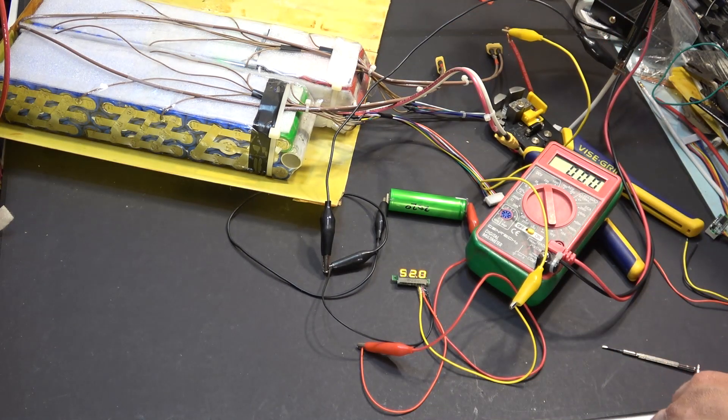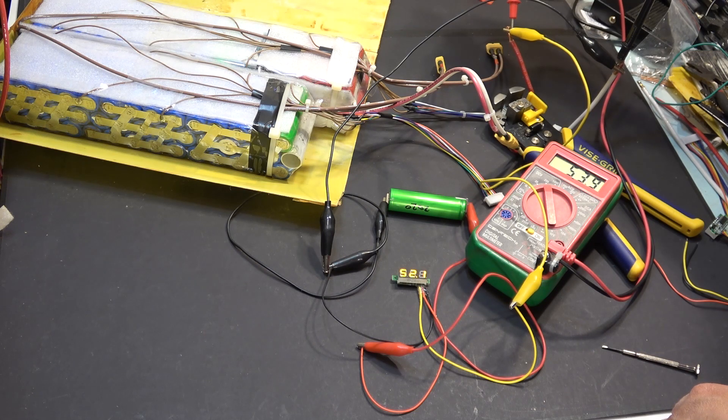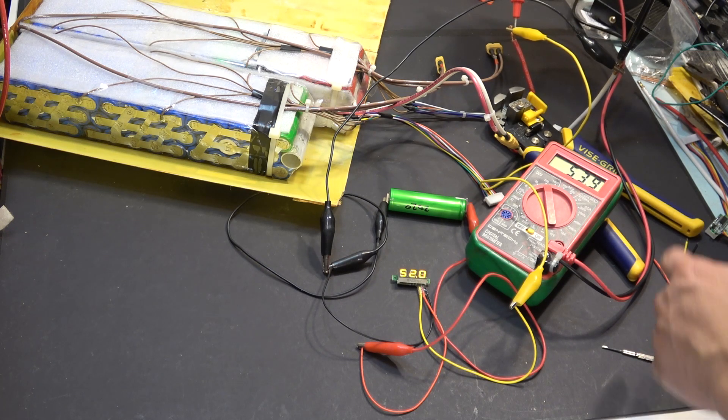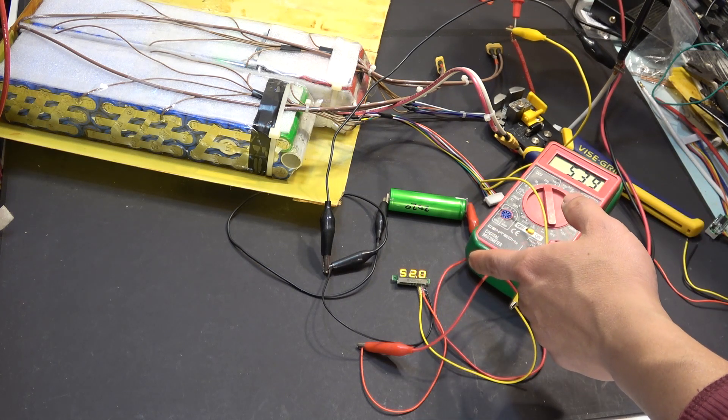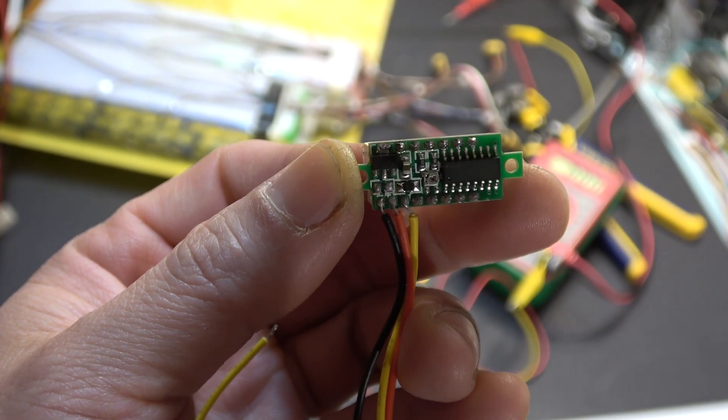So let's measure the actual voltage of my battery using my meter here. 53.9 volts. So it's not very accurate, is it? That's bad news, but the good news is you can adjust the voltage.